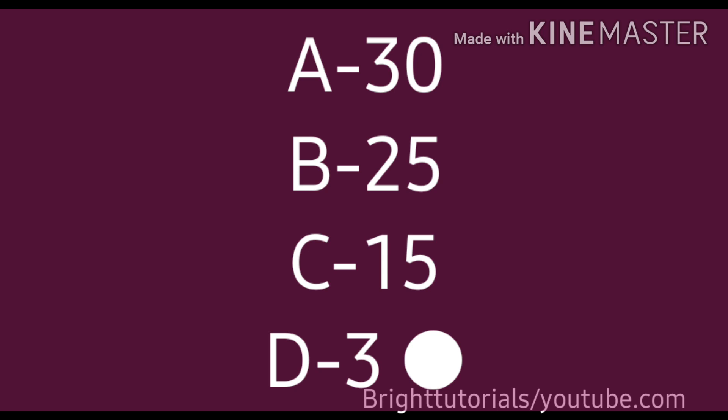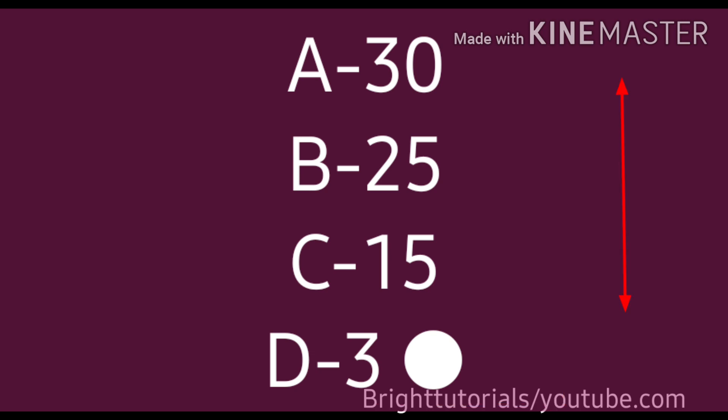First, start with the options which you have answered the least. For example, if you have answered option A for 30 questions, option B for 25, option C for 15, and option D for only 3 questions — start with option D first, then go to option C, then option B, then option A. By using this trick you can easily pass MSET 2020, and not only pass but score good marks.